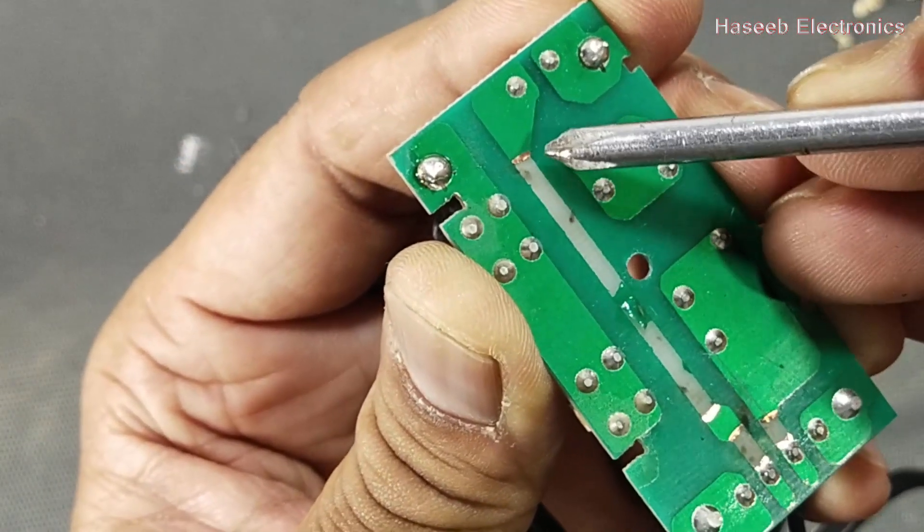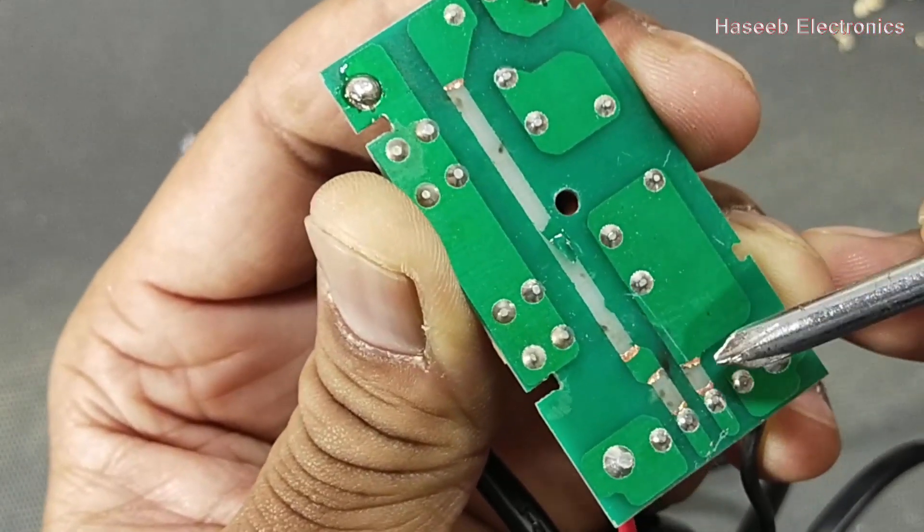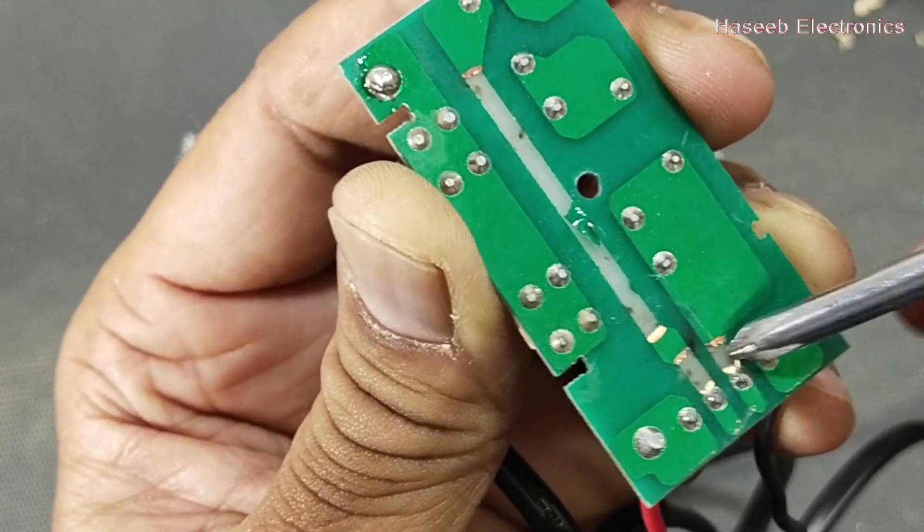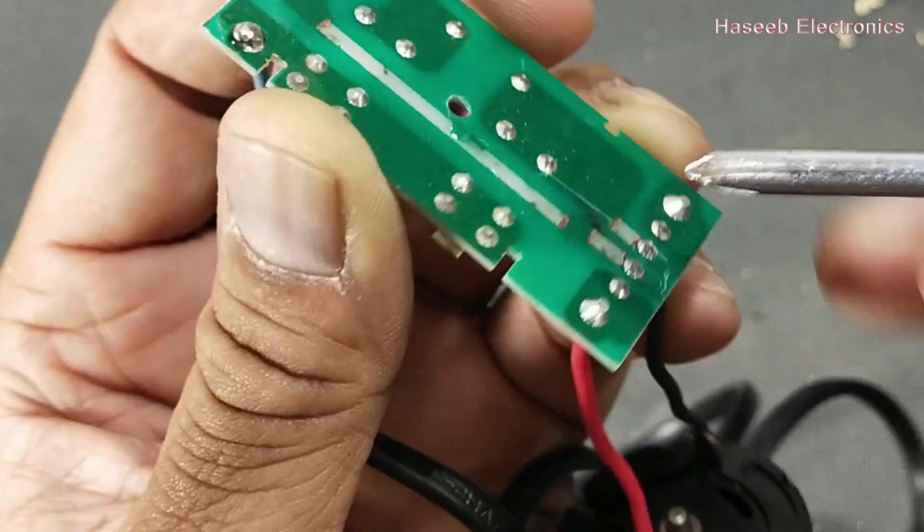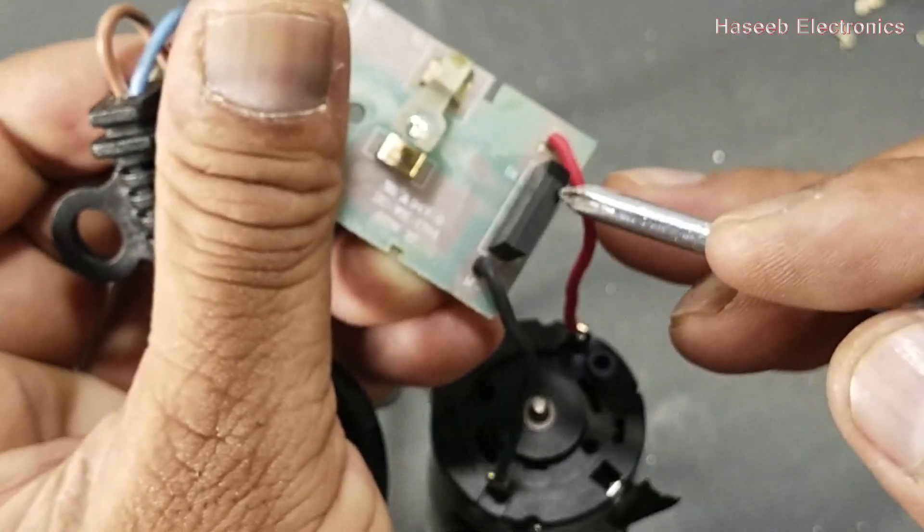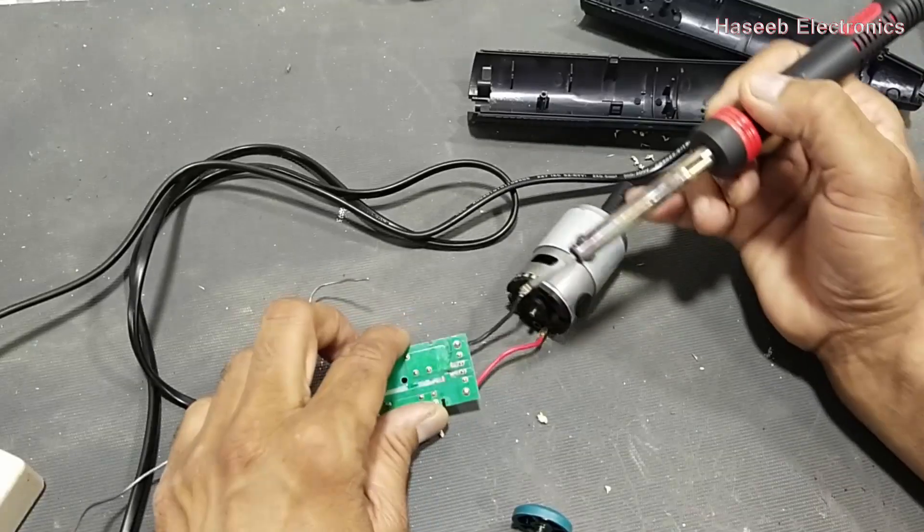It has damage here. This print is damaged and this print is damaged. That means there is overcurrent. This overcurrent most of the time is due to damage of this bridge rectifier. Now I will remove these wires.